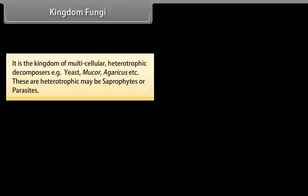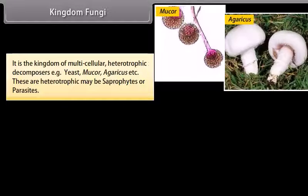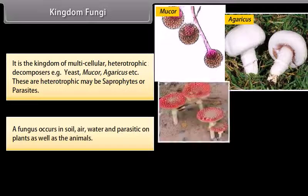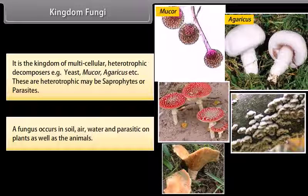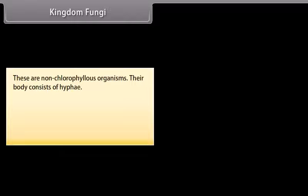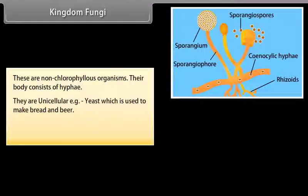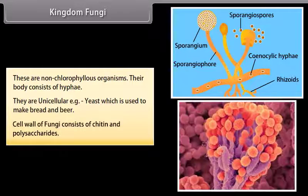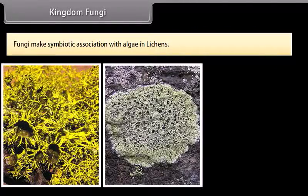Kingdom Fungi is the kingdom of multicellular heterotrophic decomposers. Examples include yeast, mucor, and agaricus. These heterotrophs may be saprotrophs or parasites. A fungus occurs in soil, air, water, and parasitic on plants as well as animals. These are non-chlorophyllous organisms. Their body consists of hyphae. They are unicellular — for example, yeast which is used to make bread and beer. The cell wall of fungi consists of chitin and polysaccharides. Fungi make symbiotic associations with algae in lichens.